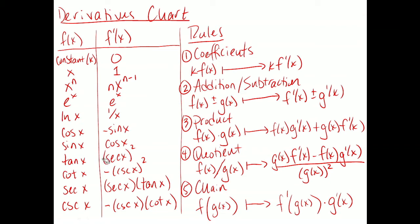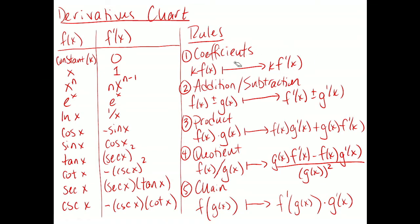In reality I'm not going to ask you things that easy — it's going to involve the rules on the right. The first two rules, the constant multiple and addition/subtraction rules, are the easiest. If you have a coefficient in front of a function, just carry it into the derivative. With addition or subtraction, just do the derivative of each term separately. The product, quotient, and chain rules require more work.